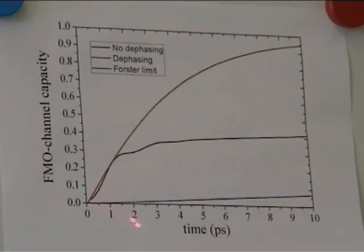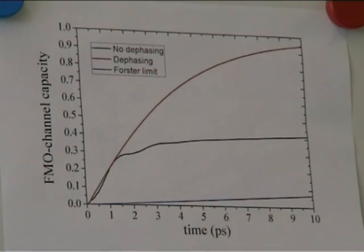Here you see the classical capacity as a function of time, in the scale of picoseconds. If you have a quantum evolution without dephasing, this is the behavior for the classical capacity, but if you apply dephasing, you have this remarkable enhancement.